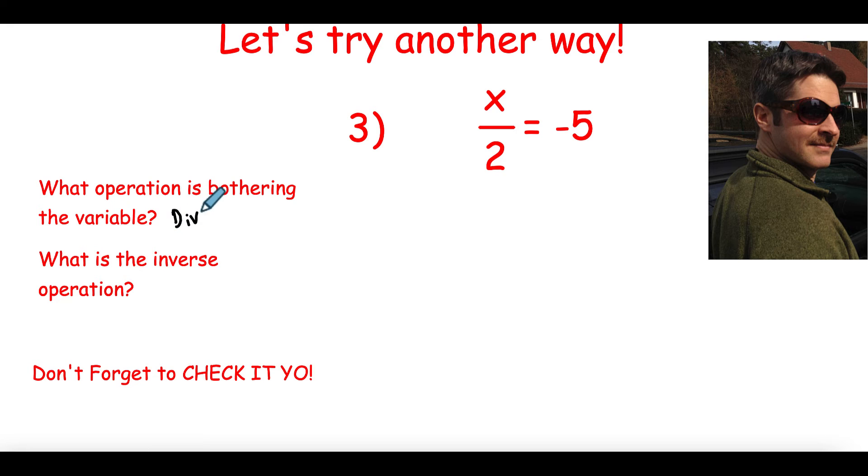That is our operation that is bothering this. So then I want to think, what's the opposite or what's the inverse operation? So our inverse is to multiply. I'm going to multiply. The opposite of dividing by 2 is multiplying by 2. And I'm going to show you why we do that here in just a second. So when I multiply both sides by 2, you'll notice that these 2s here cancel out. 2 divided by 2 is 1, and that leaves me with an x. And over on this side, negative 5 times 2 is negative 10. And the reason we did the opposite here was it canceled out.